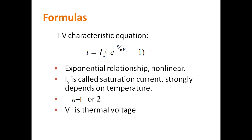The VI characteristics of the diode are nonlinear. The diode current is given by the relation: I = I_S × (e^(V / η·V_T) − 1), where I_S is the saturation current, η equals 1 for germanium and 2 for silicon, and V_T is the thermal voltage.